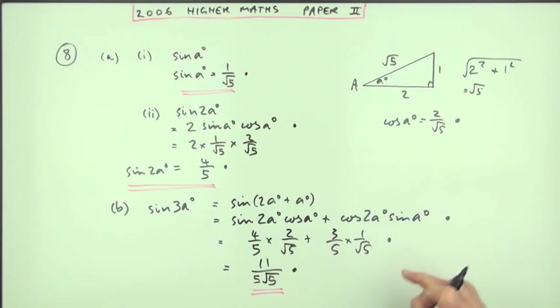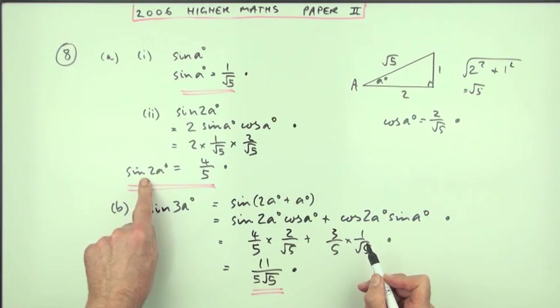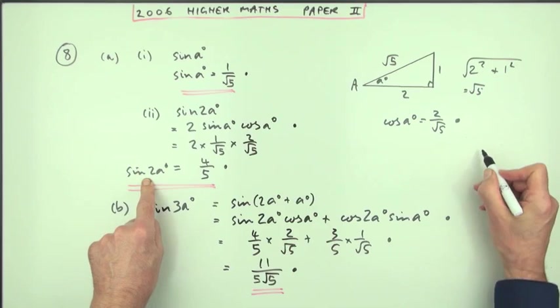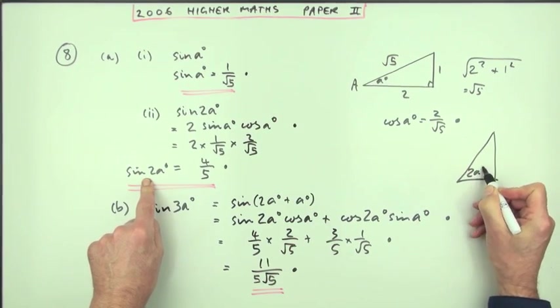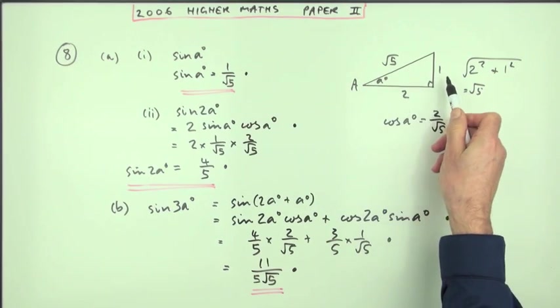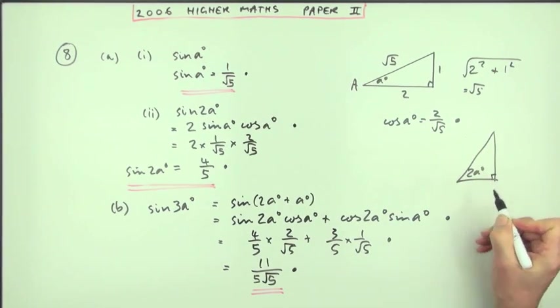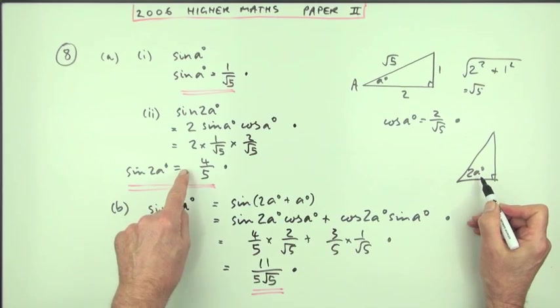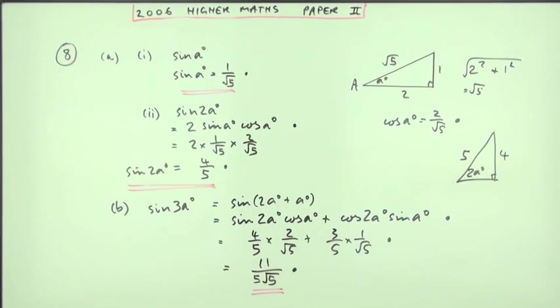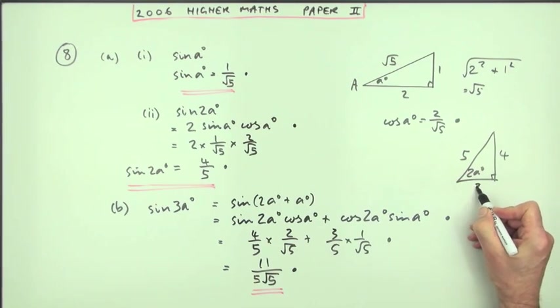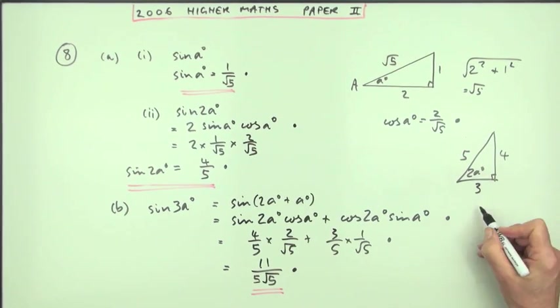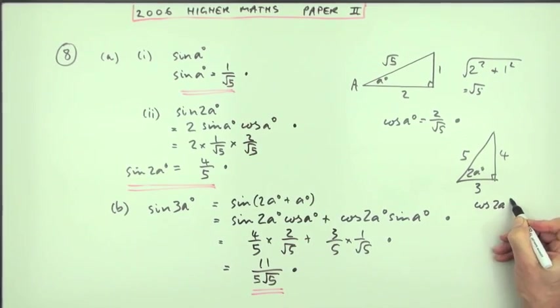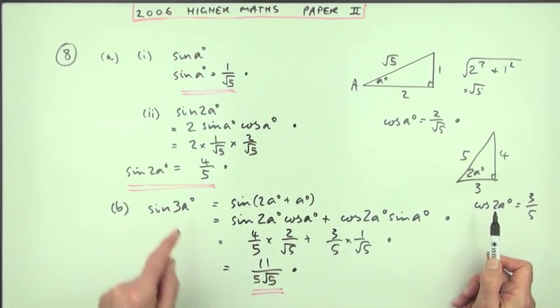Now there is another way of working out this cos two A without going through the formula. Since you know the value of sine two A, you can construct the triangle which has got an angle of two A in it. Which of course isn't simply this triangle doubled up. No. I know the numbers for the two A triangle. The sine is four over five. Which means using Pythagoras, this side has to be a three. Because here's a three, four, five triangle. So straight away you can say, what's the cosine of this new two A angle? It's adjacent over the hypotenuse. It's three fifths. It's a much neater way of working out the cosine of the angle once you know the sine of it.